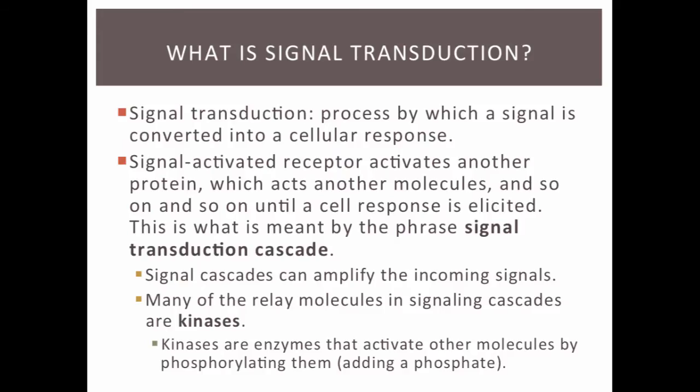Many of these signal transduction cascades involve a special type of enzyme known as a kinase. When activated, a kinase activates other molecules by phosphorylating them, which just means that they activate other molecules by adding a phosphate to them.